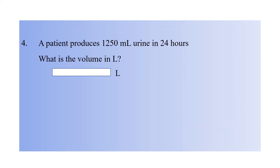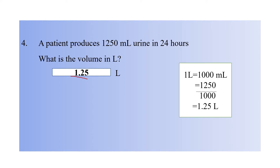Question four: a patient produces 1250 mL of urine in 24 hours. What is the volume in litres? The correct answer is 1.25 litres. As you are converting from the lowest unit to the highest unit, you have to divide. As shown in the box, 1 litre equals 1000 mL, so divide 1250 by 1000 to get 1.25 litres.